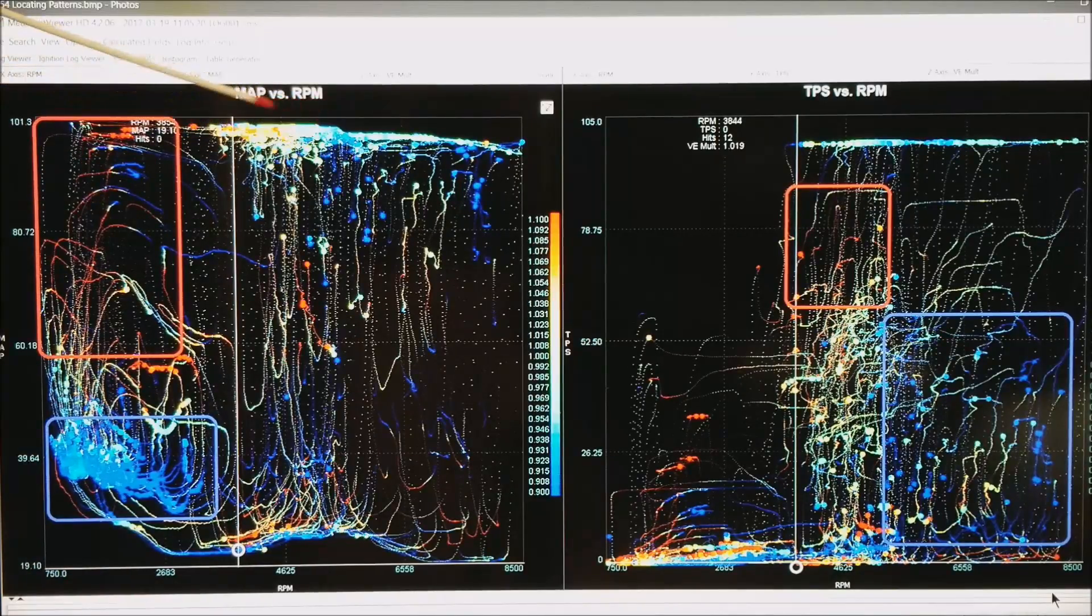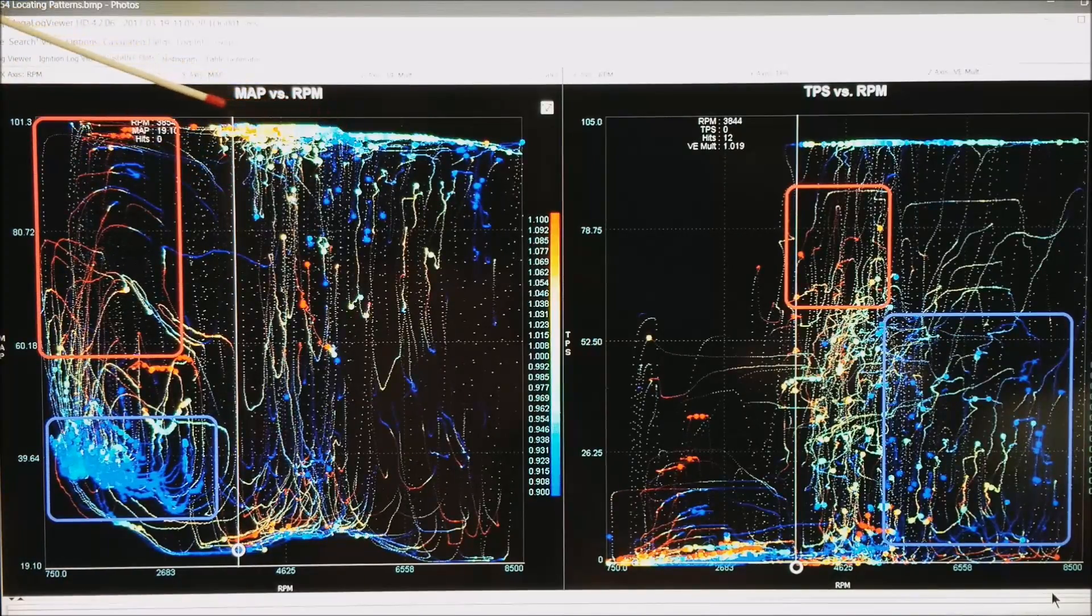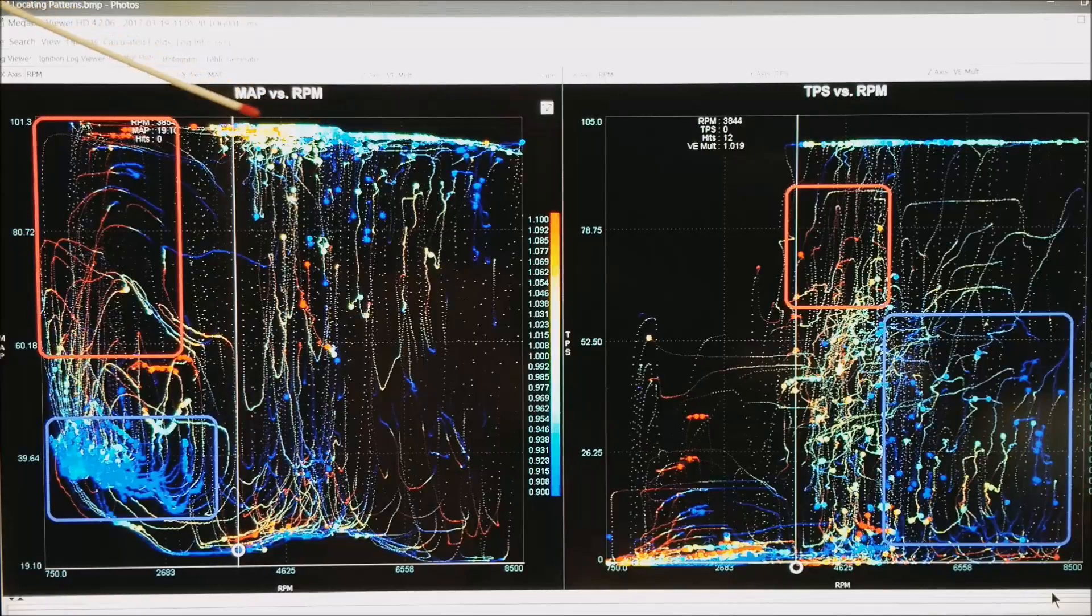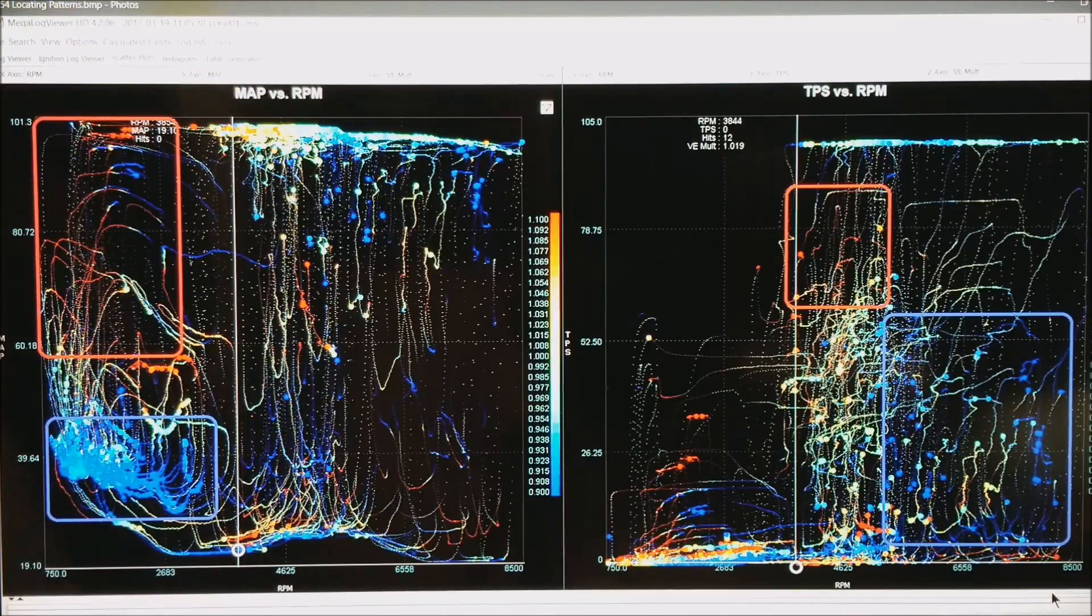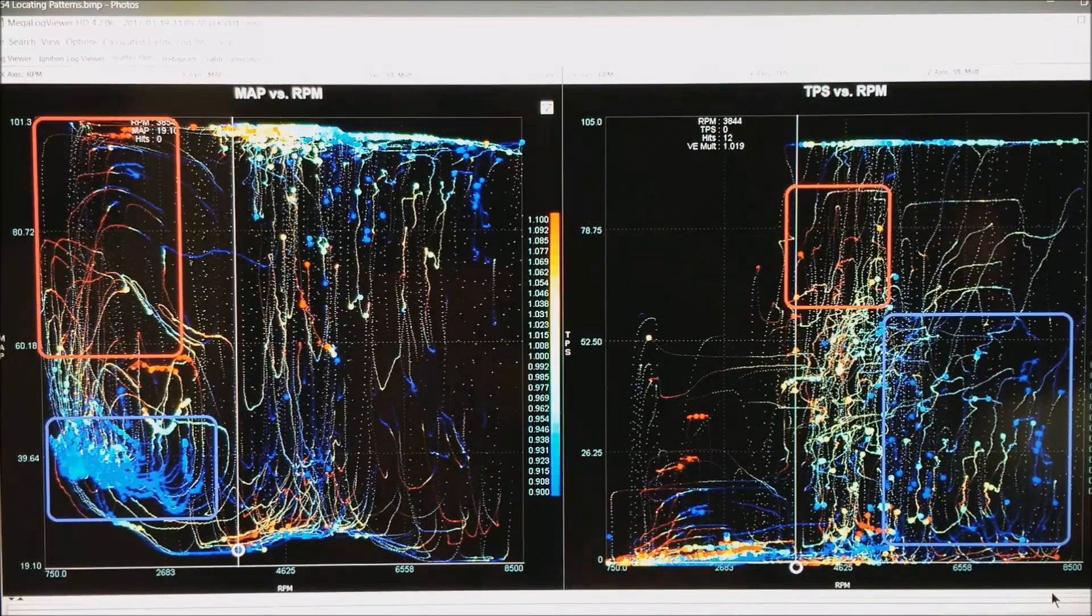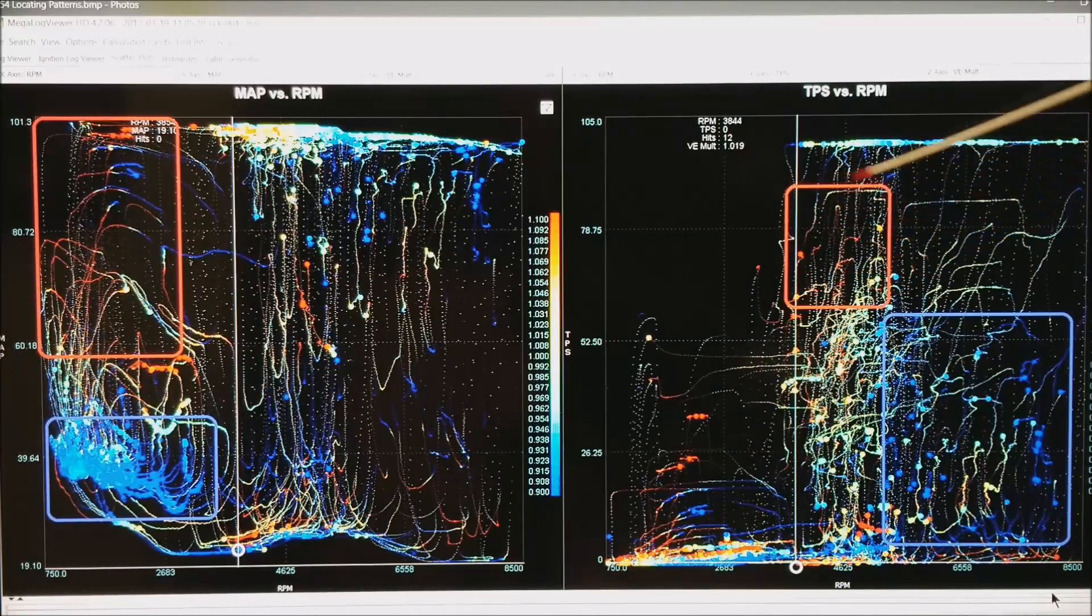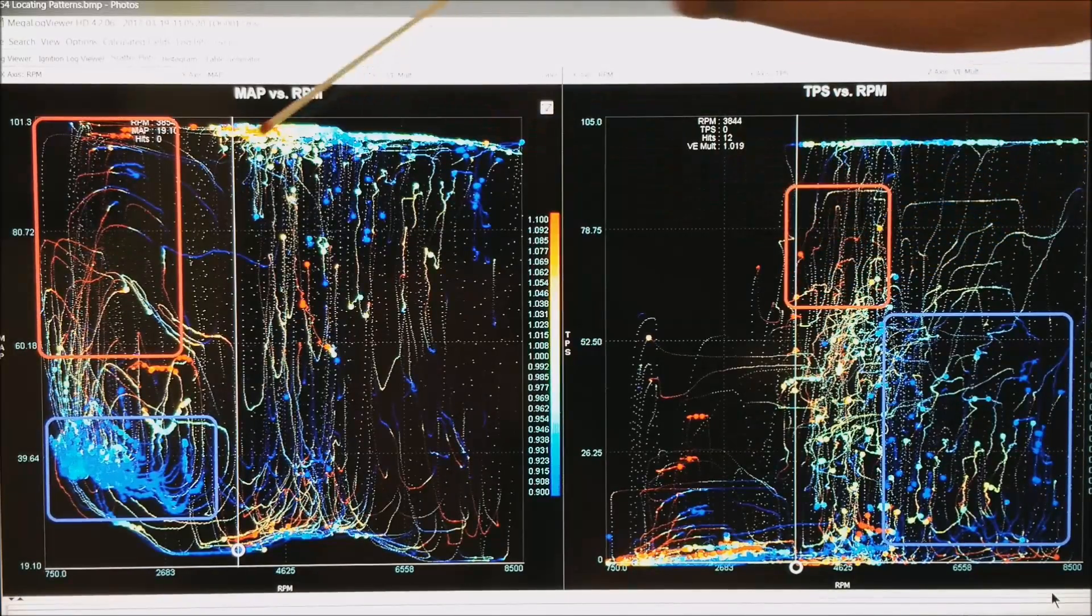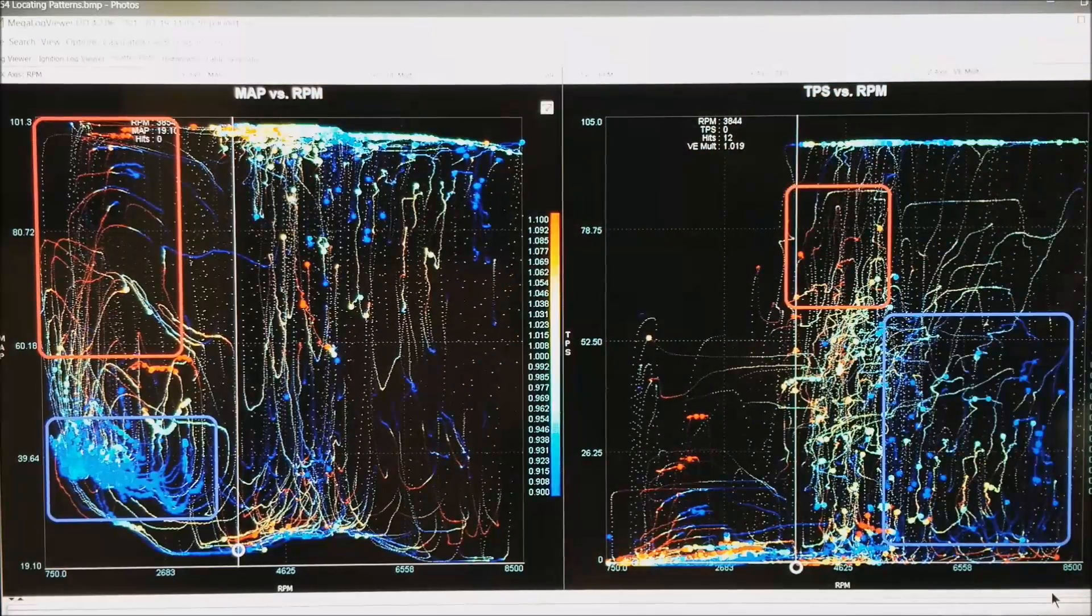And notice, right here, it is really difficult in Speed Density to figure out what you can do in that area. But, if we look at the data and throttle position based, it is fairly clear that there is a red area right here, showing up as little dots here, almost random.